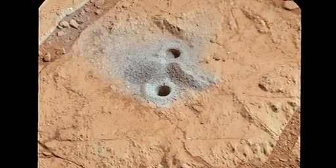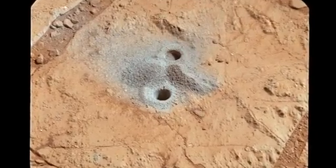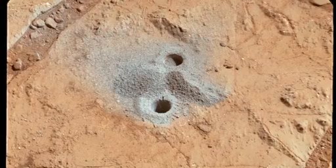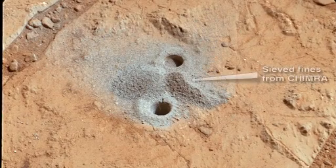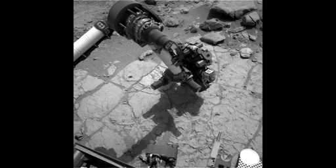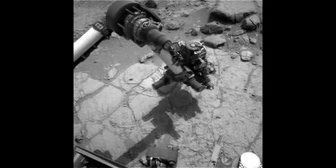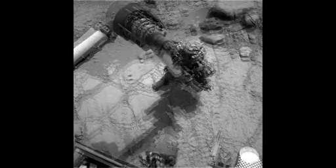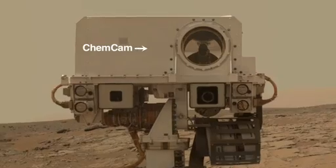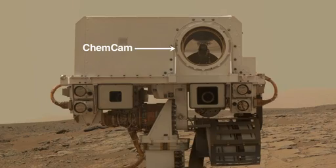After delivering a number of small portions to SAM and ChemCam, Curiosity dumped the remaining material in two piles. One pile is made up of material that went through a sieve; the rest wasn't sieved. We put those piles near the original holes so that instruments on Curiosity's arm and mast, like ChemCam, could study them all together.